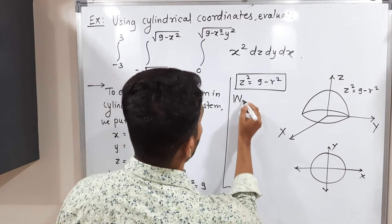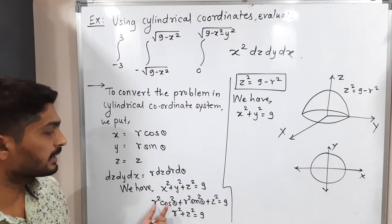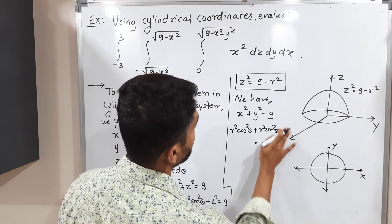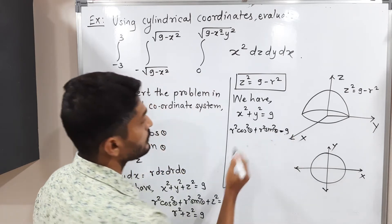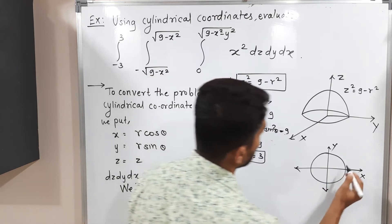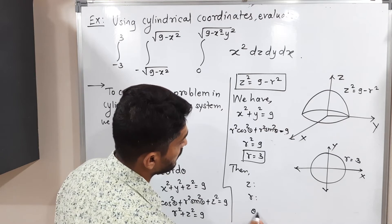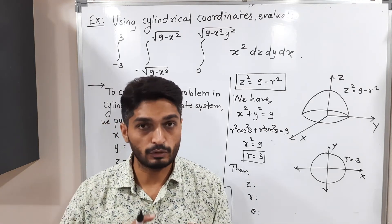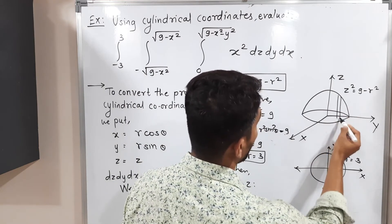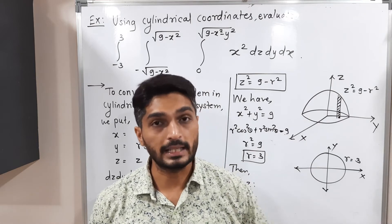For the circle x² + y² = 9: substituting gives r²cos²θ + r²sin²θ = 9, so r² = 9, meaning r = 3. Now for the limits: z goes from 0 to √(9−r²), r goes from 0 to 3, and θ goes from 0 to 2π to cover the full circle.